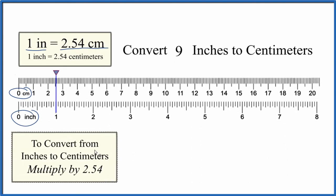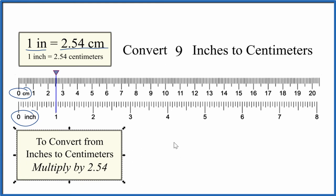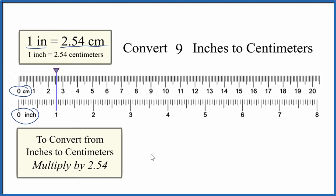So to convert from 9 inches to centimeters, we just multiply our inches, 9 inches times 2.54, that gives us centimeters.